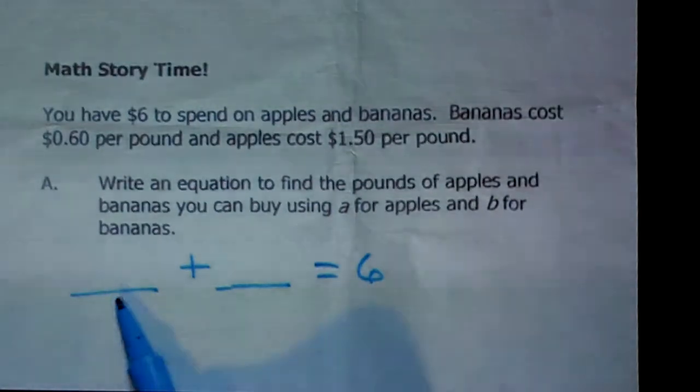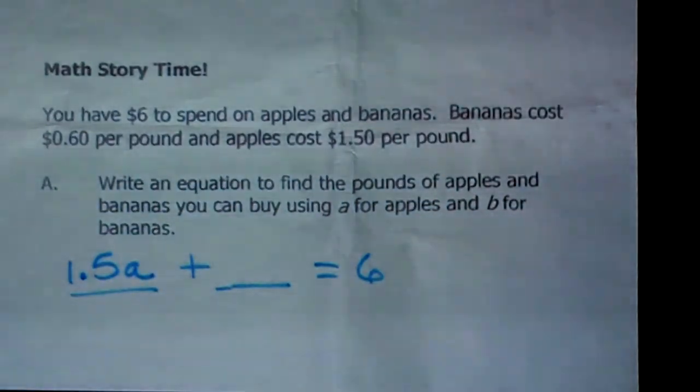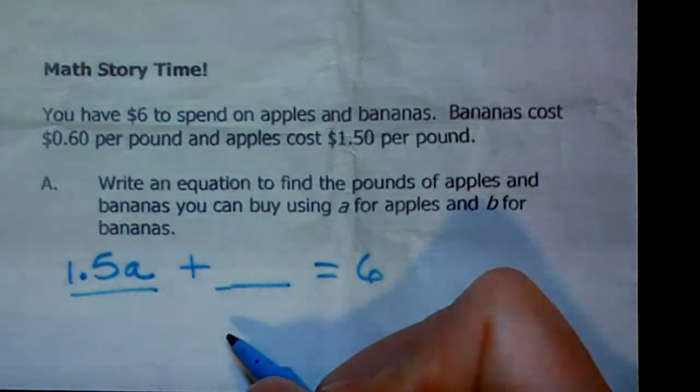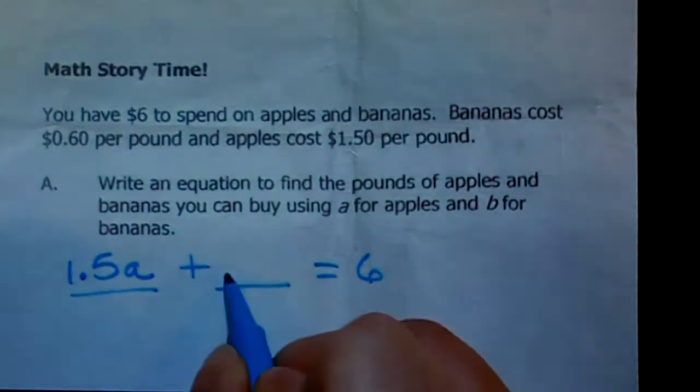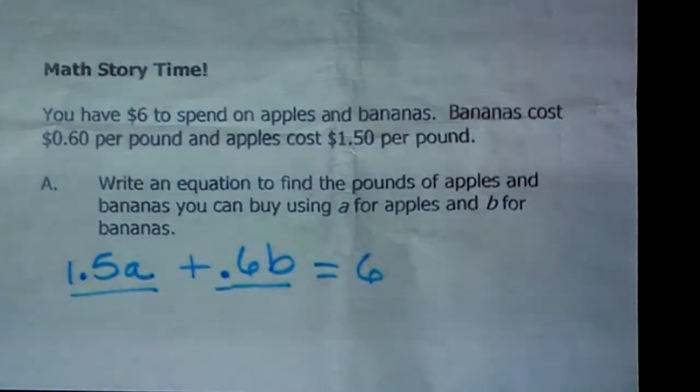So if bananas cost $0.60 a pound and apples cost $1.50 per pound, okay, how do we do this? Well, the cost of apples, it's going to be $1.50 times however many pounds I buy of apples. That would mean 1.5a. And then we have $0.60 a pound for the bananas. Bananas are much cheaper. It's true. I like Honeycrisps, so my apples are even more than $1.50 a pound. I'm picky. So I'm going to put the 6 tenths, which represents 60 cents, and I'm going to put B there for bananas. This equation is going to tell me how many pounds of apples and how many pounds of bananas I can buy.